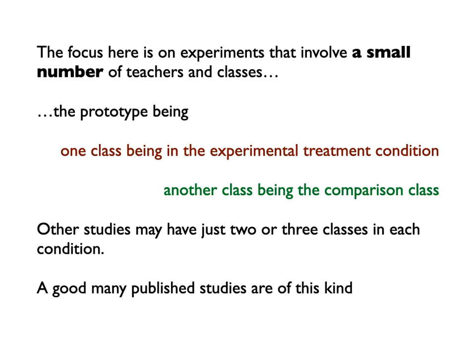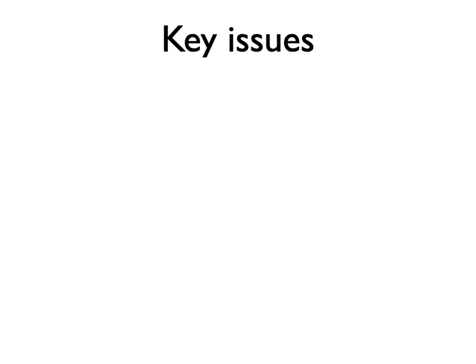The prototype of this type of study involves one class in the experimental treatment condition and another class being the comparison class. Sometimes both classes are taught by the same teacher, sometimes not. Sometimes the classes are not even from the same school. Other studies may have just two or three classes in each condition. There is a host of difficulties in doing experimental studies into classroom teaching, and I've published an account of a number of these in a review for Studies in Science Education. Here I wish to focus on and illustrate a few themes.